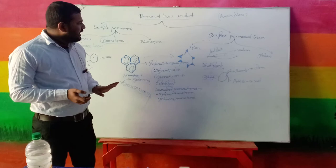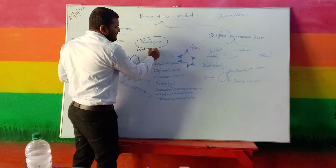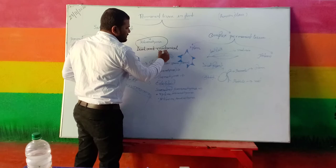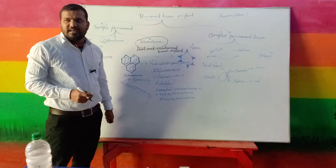The next one is sclerenchyma — the dead and mechanical tissue in plants. Group of dead cells present in a plant are termed sclerenchyma. Due to the excessive amount of storage, the cell wall becomes the thickest.